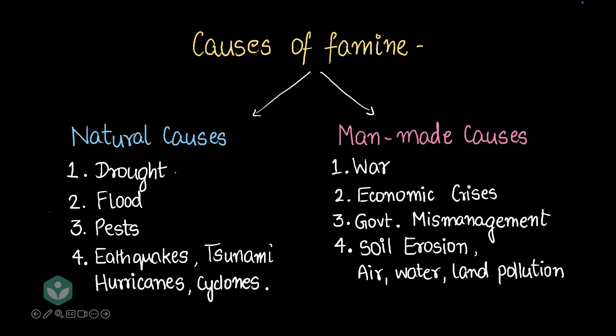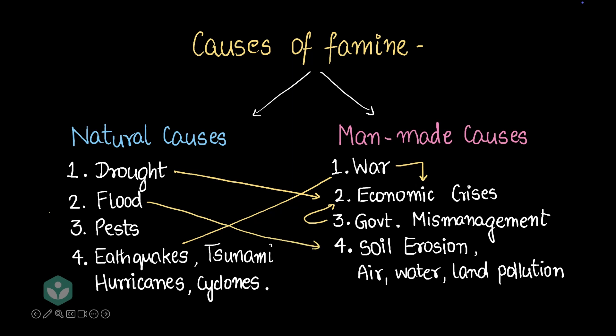Looking at all the reasons discussed, you can see that a war could cause an economic crisis, a drought could cause an economic crisis, and even government mismanagement could cause an economic crisis. Often a lot of different factors together cause a famine — it's usually never one standalone reason. For example, an earthquake during a war could intensify an already present food shortage, a flood could cause soil erosion, or pests could be caused by pollution. It's usually a mixture of three or four reasons.